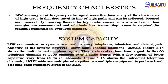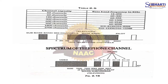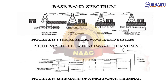Microwave Spectrum for BSNL includes bands at 2 GHz, 4 GHz, 6 GHz, 7 GHz, 11 GHz, and 13 GHz, each having different bandwidth availability and spectrum spaces. Microwave communication systems are used to carry telephone, television, and data signals; the majority carry multi-channel telephone signals. A typical system carries 60 to 2,700 telephone channels over a radio bearer. Individual telephone channels 4 kHz wide are multiplexed together to get the baseband frequency. Figures show a typical microwave radio system and the schematic of microwave termination.